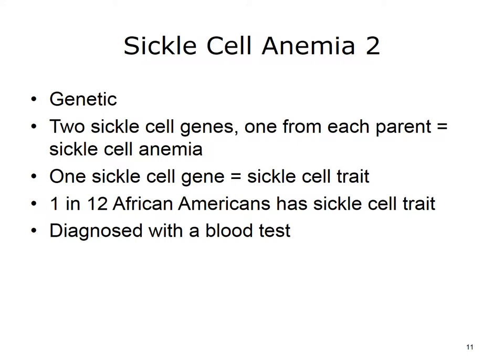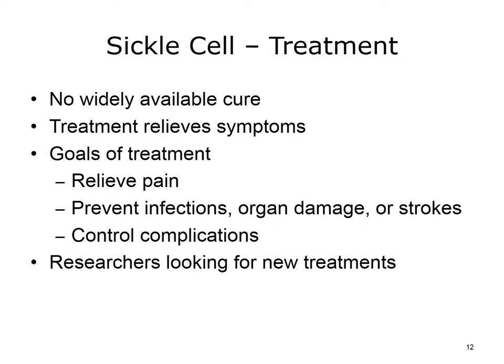This disorder is caused by a genetic problem. People with sickle cell anemia are born with two sickle cell genes, one from each parent. If you only have one sickle cell gene, you have what is called sickle cell trait. About 1 in 12 African Americans has sickle cell trait. A blood test can show if you have either the sickle cell trait or the anemia. Sickle cell anemia has no widely available cure. However, treatments can help relieve symptoms and treat complications. The goals are to relieve pain, prevent infections, organ damage, and strokes, and control complications if they occur. Blood and marrow stem cell transplants may offer a cure for a small number of people. Researchers continue to look for new treatments for the disease.